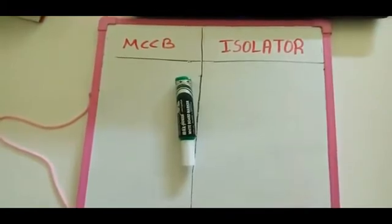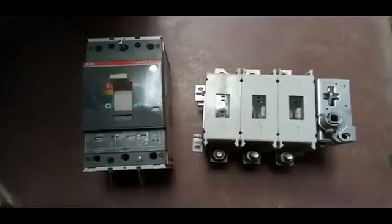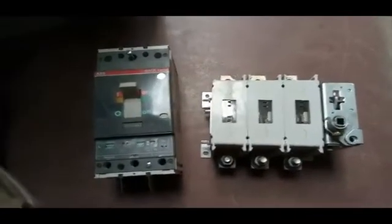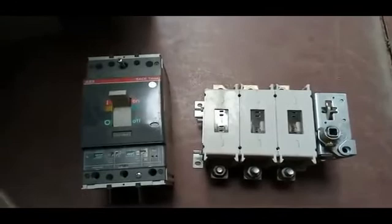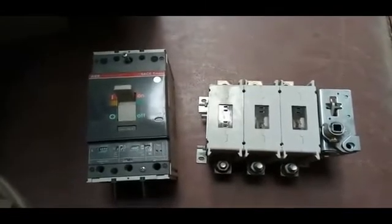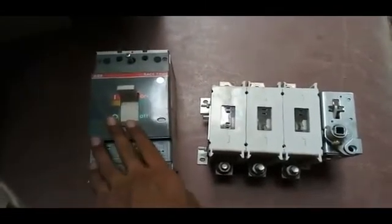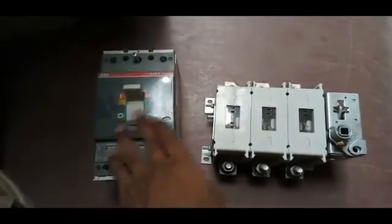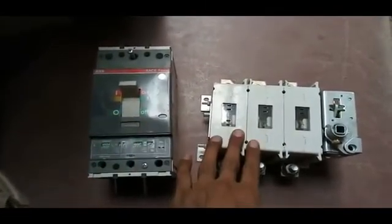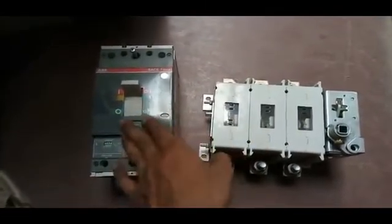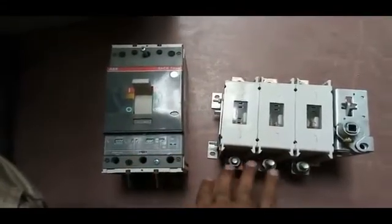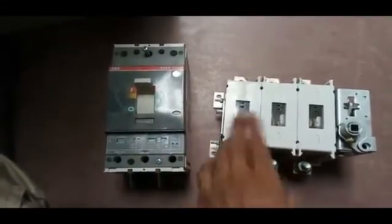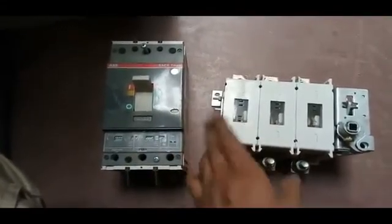Here is the real structure of MCCB and Isolator. This is one MCCB and this one is an Isolator. This MCCB is rated for 320 amperes and this Isolator is rated for 250 amperes.